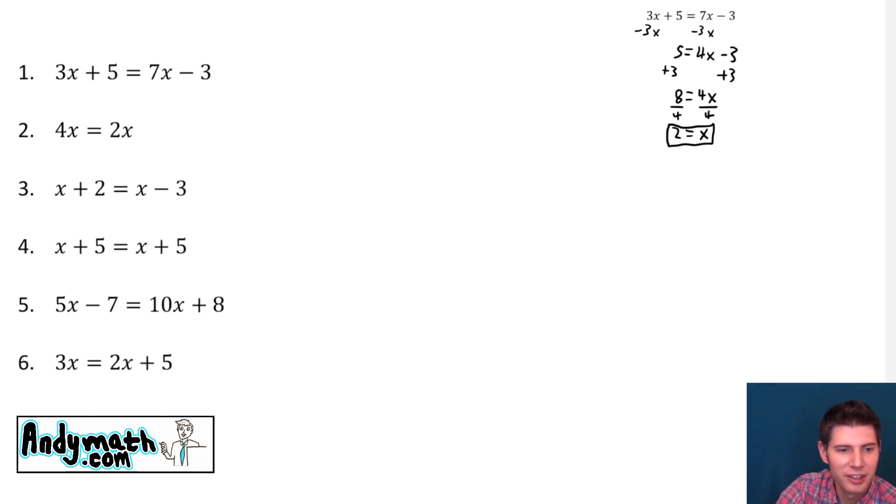So move that off to the side, and we'll do 4x equals 2x. Same goal: we want to get all the x's to one side, and I always like to go after the smaller one, so I'm going to subtract 2x from both sides. 2x minus 2x is 0, and 4x minus 2x is 2x. Then we'll just divide both sides by 2, and we get x equals 0. That's the answer to this one.